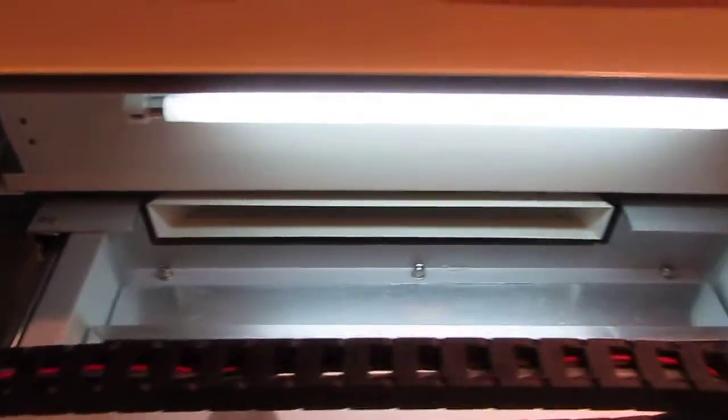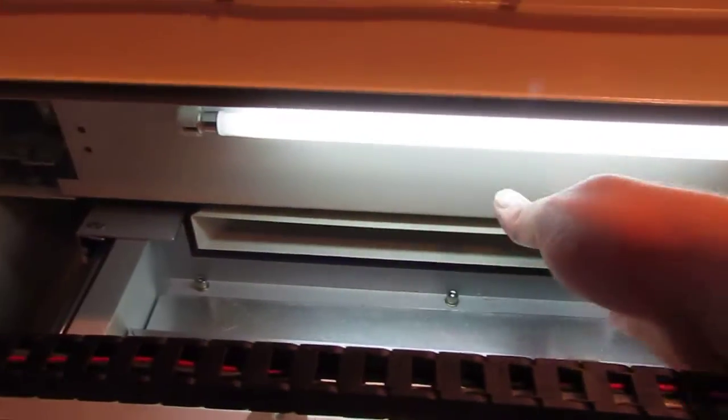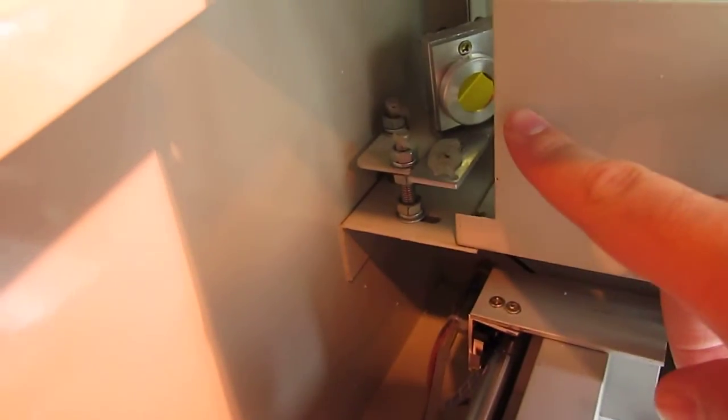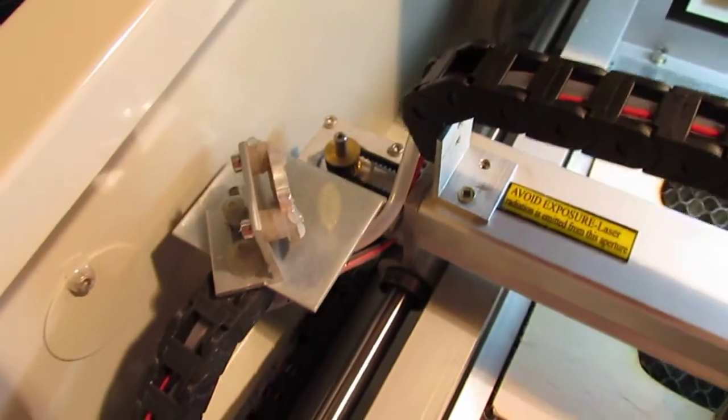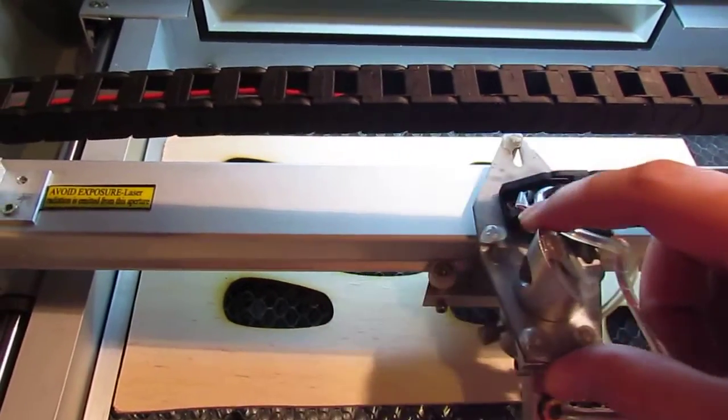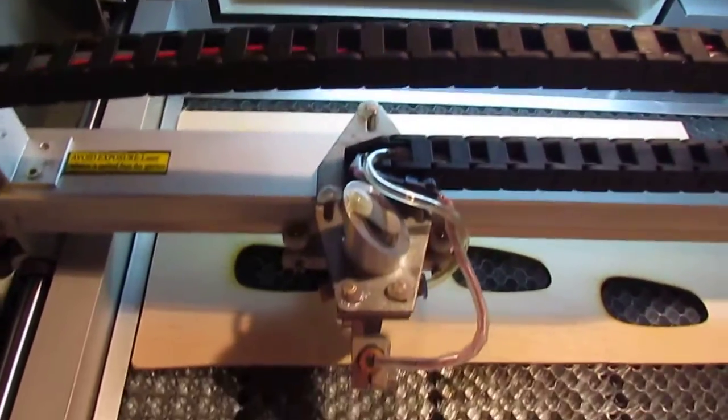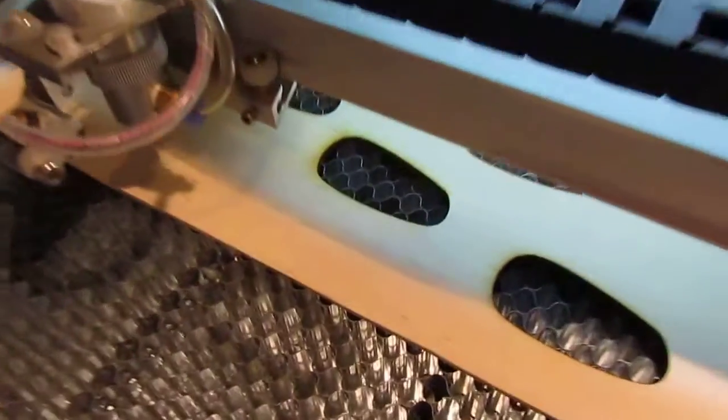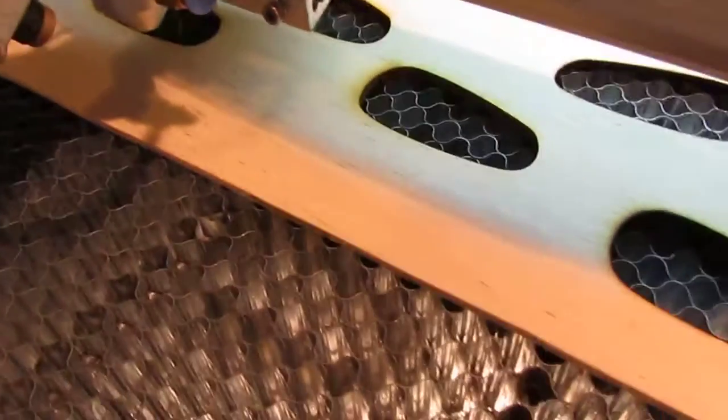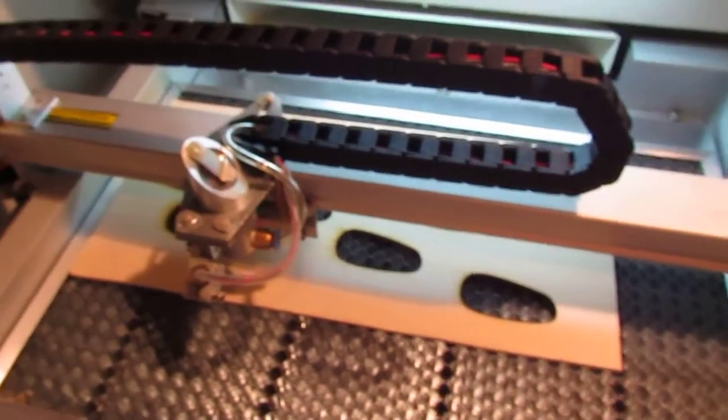And the basic way that this works is the laser tube is back behind this wall here, and it points at this first mirror. And then it goes through this mirror, which is attached to the gantry, and then through this third mirror, which is called the flying mirror, that's attached to the cut head. And then there's a lens down inside that tube, and then it points at the wood.